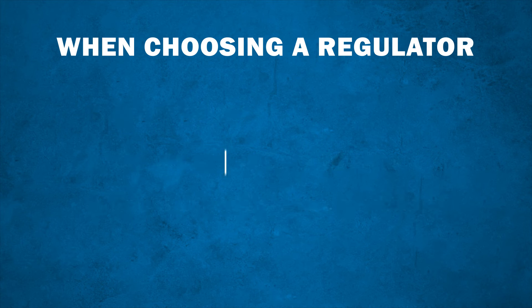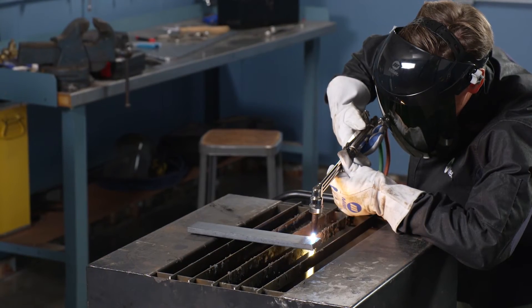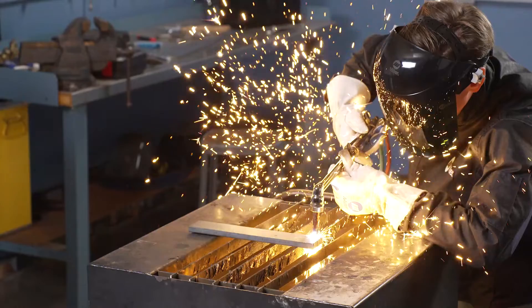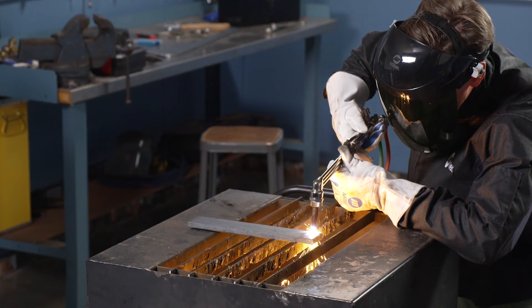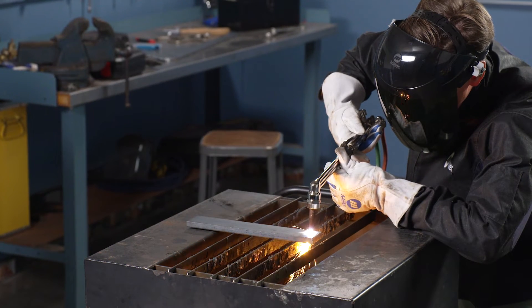You must first determine the type of fuel gas you will be using with your application. Acetylene is one of the most common types of gases used in oxyfuel applications. However, LP gases such as propane, propylene, or natural gas can also be used.